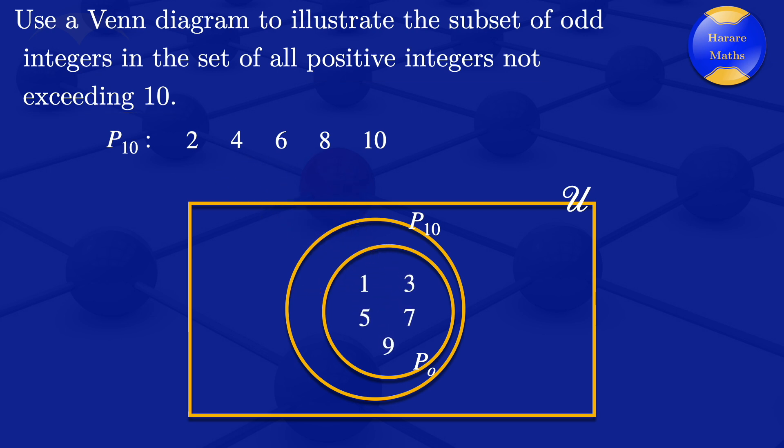Then the other remaining elements there, they are inside that set of positive integers, but they are not odd. So we have those 2, 4, 6, 8, and 10 and they are in the set of positive integers not exceeding 10, but they are outside those that are odd.